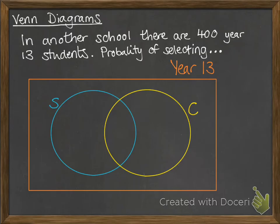Okay, we're going to have a look at another example. In another school, there are 400 year 13 students. This time, we're going to be given probabilities rather than actual numbers of students. And it's very feasible, you could be asked questions like this, where you've got probabilities instead of numbers.